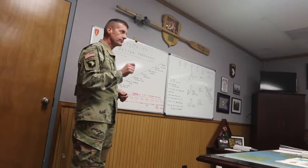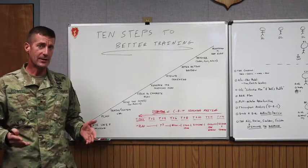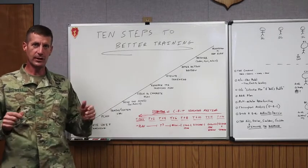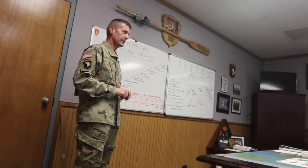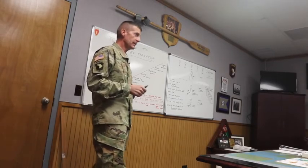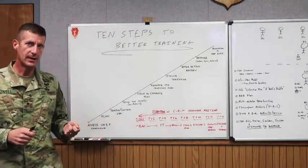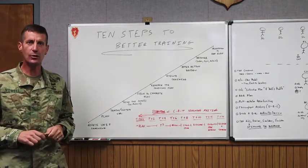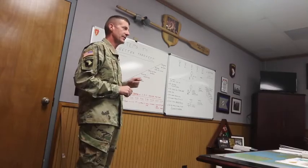Chapter 3 talks about making sure you identify specific training objectives for your training plans. For example, if you have a training evaluation outline for conduct troop leading procedures, we want to make sure we can plan, prepare, execute, and cover the troop leading procedures for an exercise. But what specifically do you want as an outcome? Is it issuing a plan? Is it doing reconnaissance? Go into those training evaluation outlines — those TEOs — and be very specific about what you want to focus your training effort on. That's the detail and science of planning.